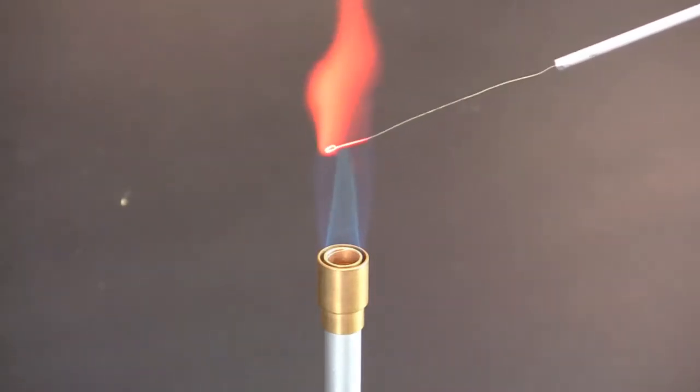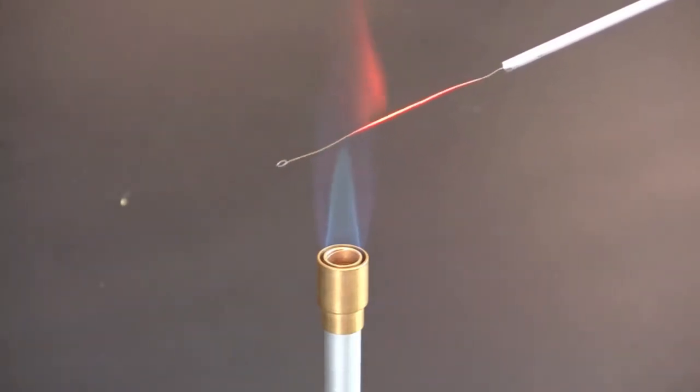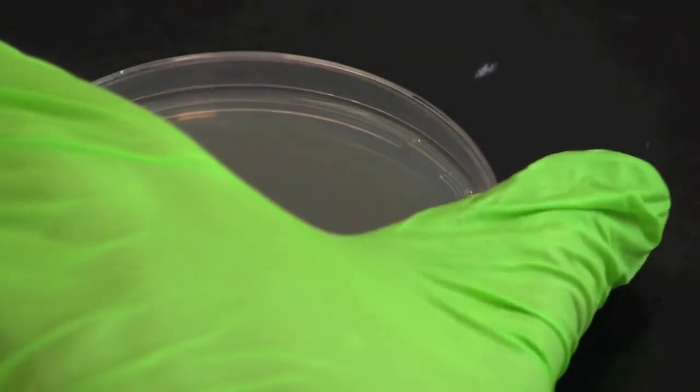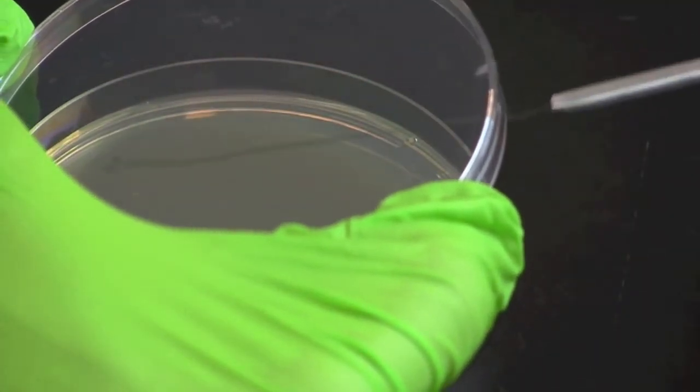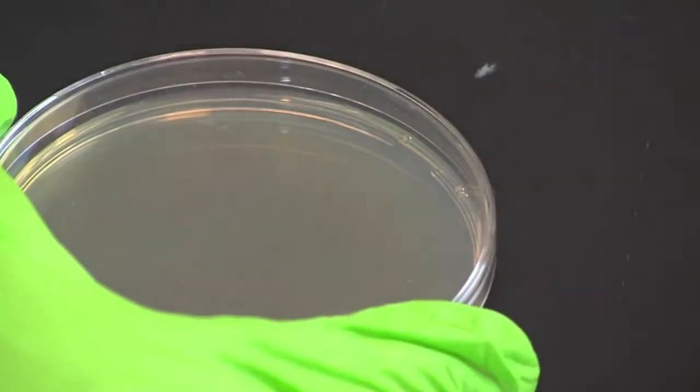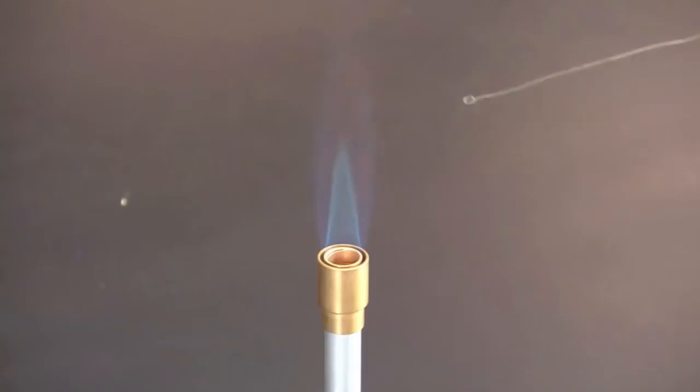Flame the loop, then draw it through one end of the second streak and rub the loop back and forth in the third quadrant about ten times. When finished, flame the loop again.